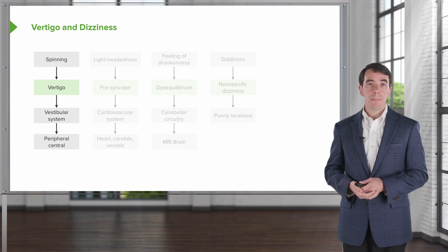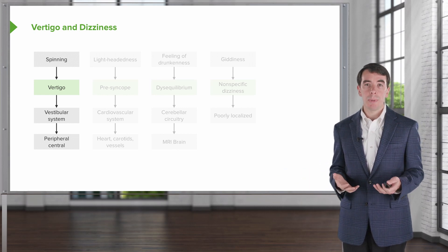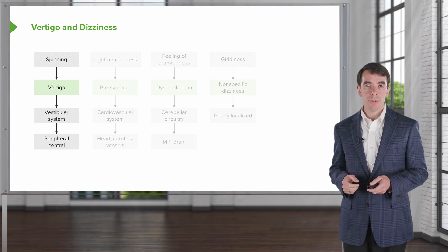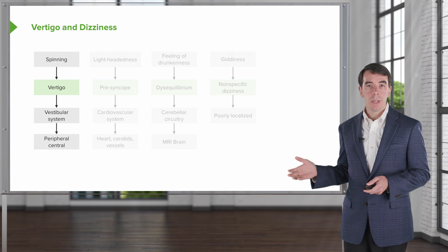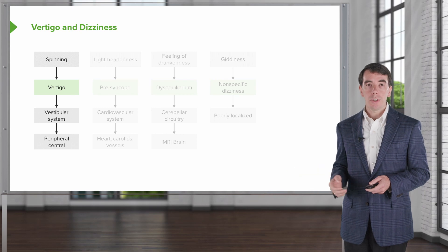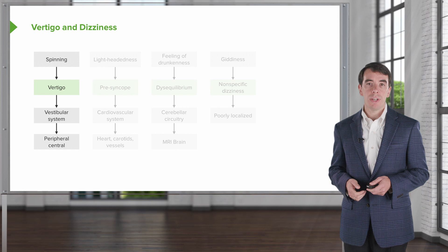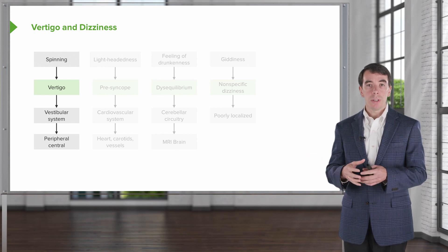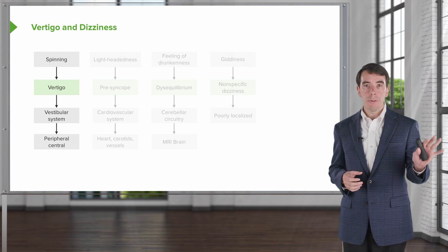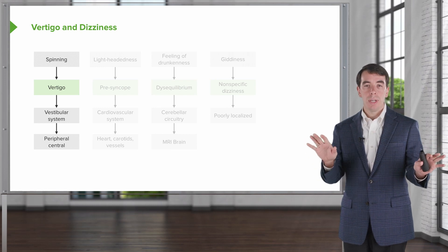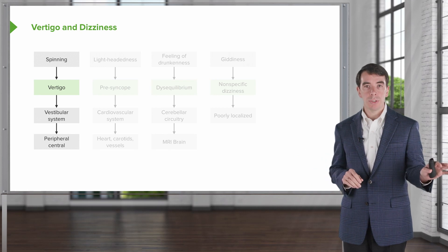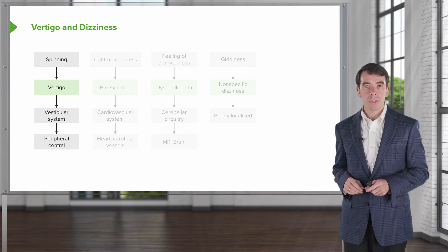Vertigo is described by patients as the room spinning or spinning around the room — that spinning quality is very common for patients suffering from vertigo. Vertigo arises from problems in the vestibular system, so our diagnostic investigation will be focused there. The vestibular system is composed of a peripheral component and a central component, so we're looking to differentiate whether vertigo is coming from the peripheral or central nervous system.